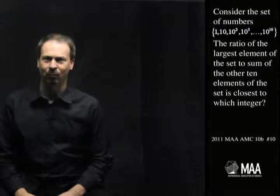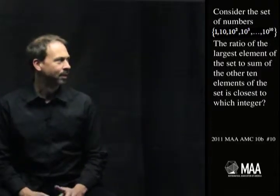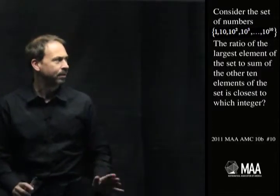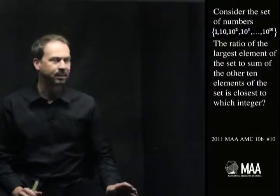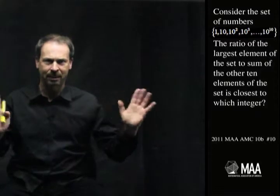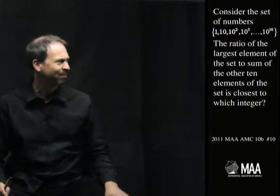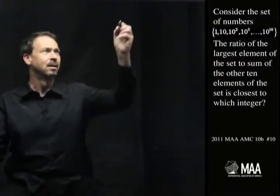I'm suddenly very confused. Let me re-read that question — let's take it very slowly. Consider the set of numbers 1, 10, 10 squared. So this is about set theory, I guess, but maybe it's not. It's just about 10 numbers.